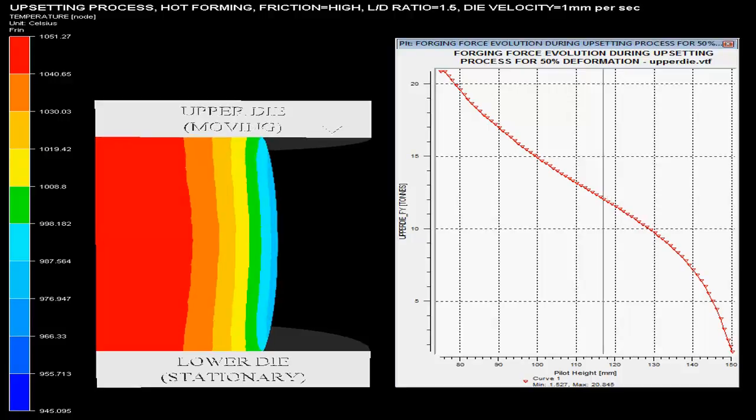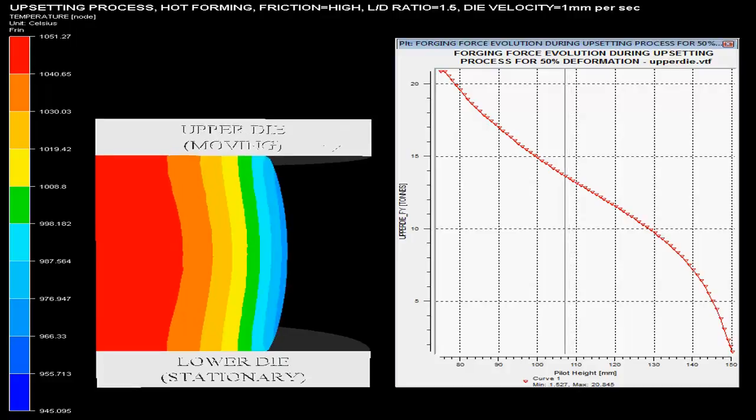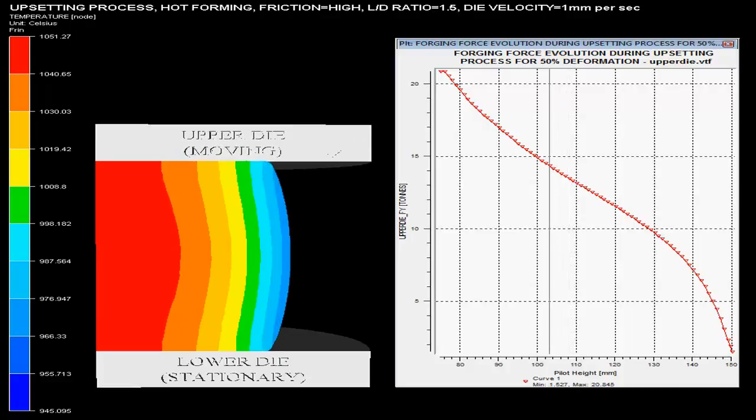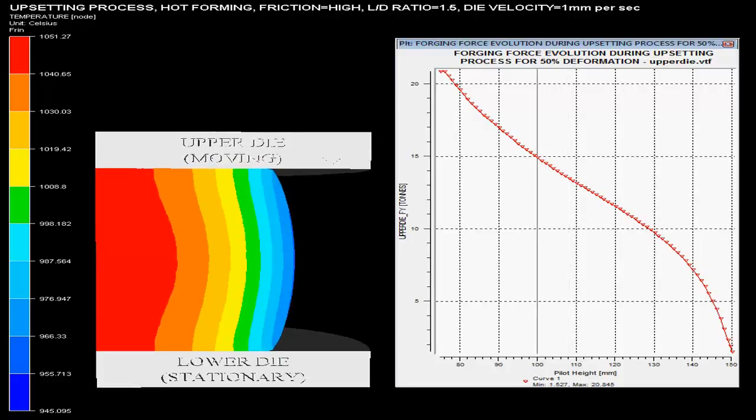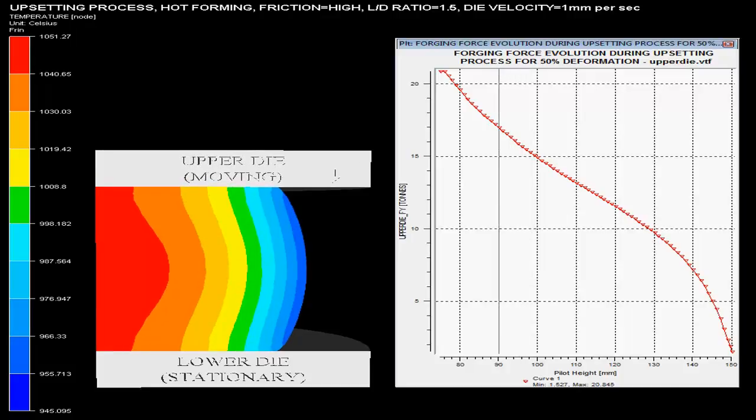The upper die presses at 1 mm per second with the lower die stationary. On the right side, a graph displays forging force on the upper die versus pilotoid, showing the force evolution during upsetting for 50% deformation.